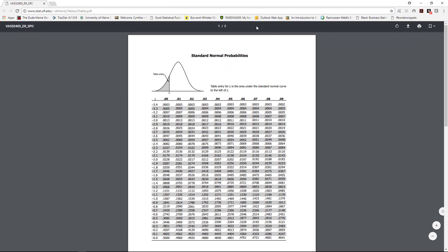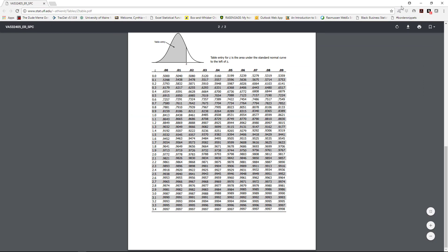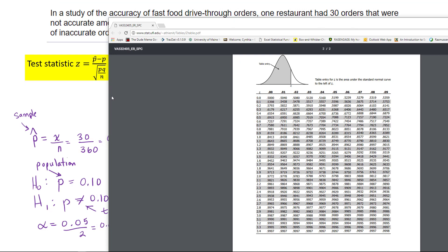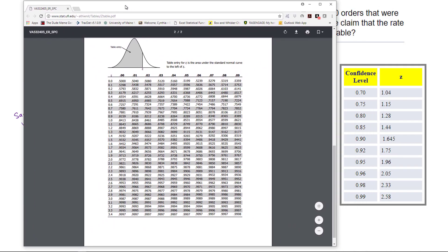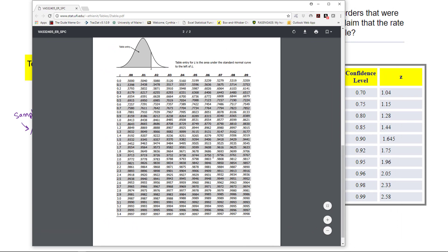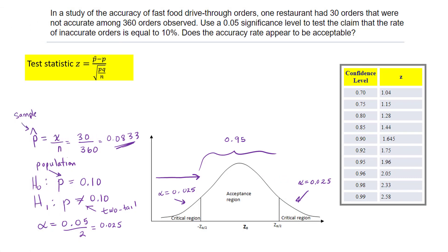Looking at this table, you might see 0.95 and 1.96, but notice it shows 0.9750. That's because you read the table from bottom up to the z-value. The 0.9750 equals 0.025 plus 0.95, which is why you look up 0.975 in the z-table.